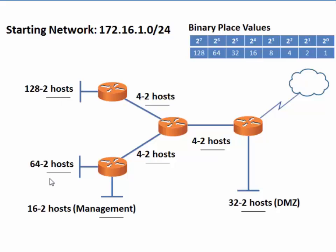Similarly, instead of 59 hosts, we can create a subnet for 64 minus two hosts, meaning 62 usable hosts. For the management network, instead of 12 hosts, we'll create a subnet for 16 minus two hosts, or 14 usable hosts. For the point-to-point networks of two hosts each, we'll use the place value of 4 to create 4 minus two usable hosts per subnet. And for the DMZ network, we'll create a subnet of 32 minus two, or 30 usable hosts. This will meet the requirement of 25 hosts for the DMZ.